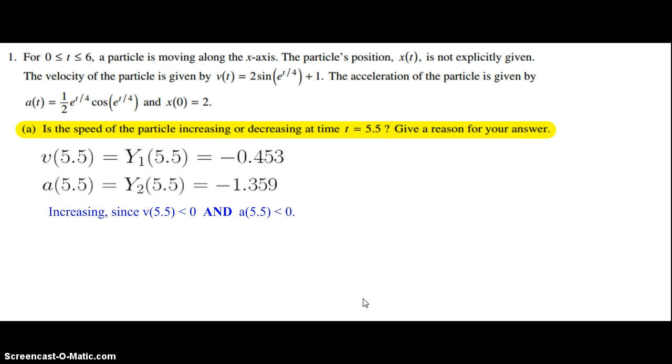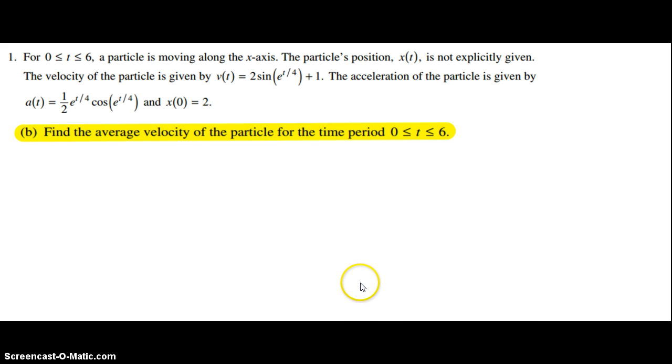We're on to Part B. Find the average velocity of the particle for the time period 0 ≤ t ≤ 6.